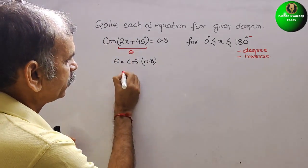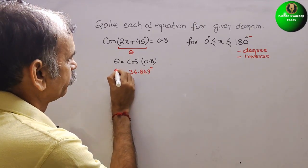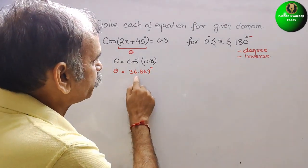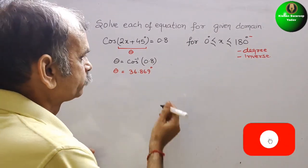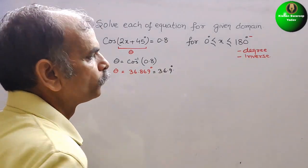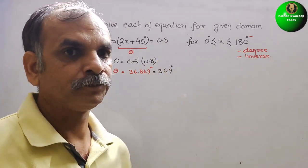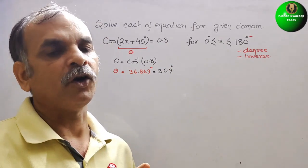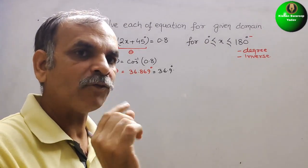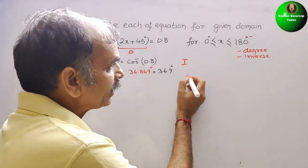So this is 36.869°, which is our theta. We can write it as 36.9°. Now, this value is positive. For cosine, positive values fall in the first and fourth quadrant — it falls under the first and fourth quadrant.